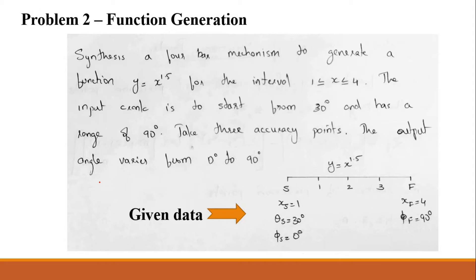In this session, we will be discussing a problem on Chebychev's spacing of precision points. The question is: synthesize a 4-bar mechanism to generate a function y equal to x raised to 1.5 for the interval 1 less than or equal to x less than or equal to 4.